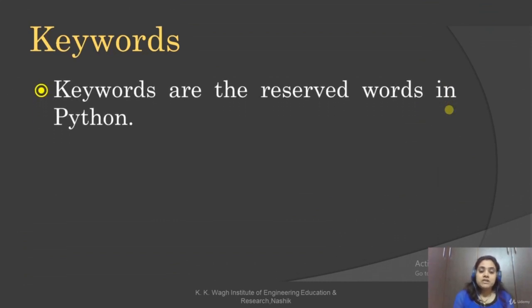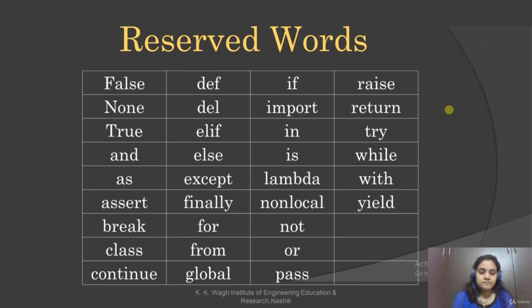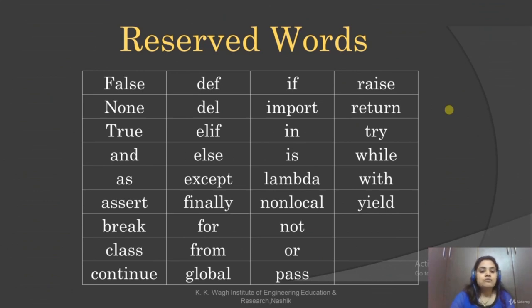What are keywords? Keywords are the reserved words in Python. We cannot use a keyword as a variable name, function name, or any other identifier. We can give any other name to the variable, but we cannot use the reserved words. For example, I should not say 'class = something' because 'class' is a reserved word.